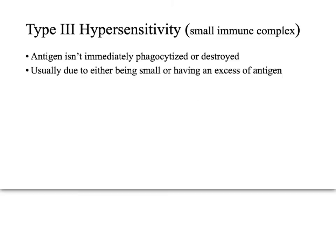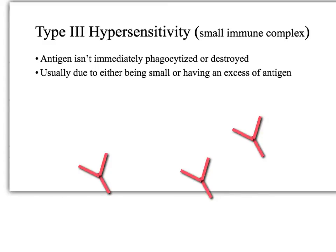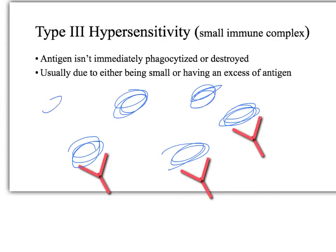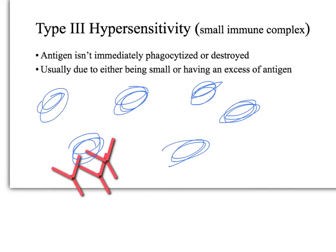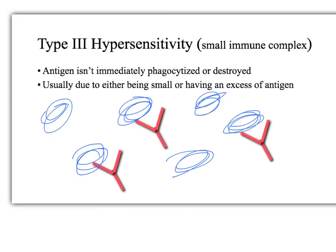For type 3, imagine you only have three antibodies but a lot of antigen — excess antigen. The body usually activates the complement pathway when you have multiple antibodies bound to one antigen. However, when there is way more antigen than antibodies, you get small immune complexes that cannot immediately activate complement. They must be small because they need to be soluble and able to move in the bloodstream.